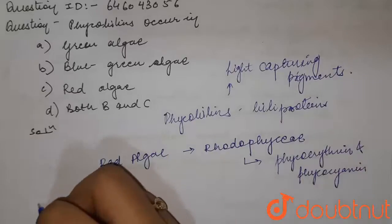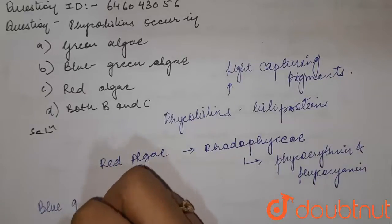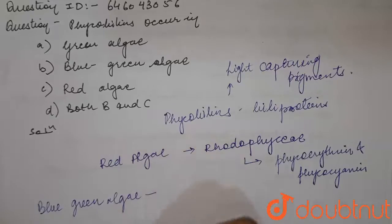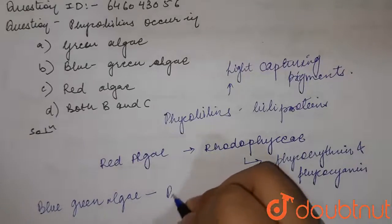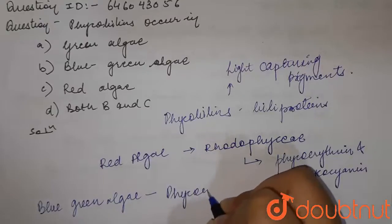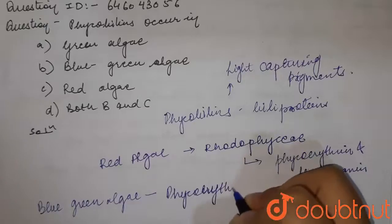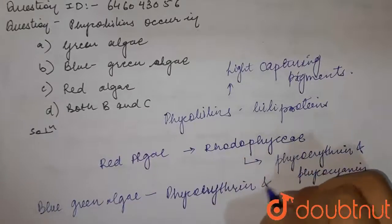If we talk about the cyanobacteria, which is blue-green algae - actually these blue-green algae are considered as monarians but they have this pigment which is phycoerythrine and phycokinin.